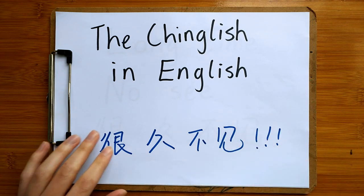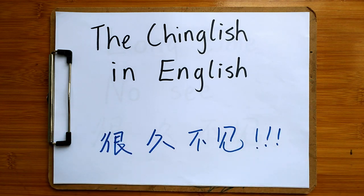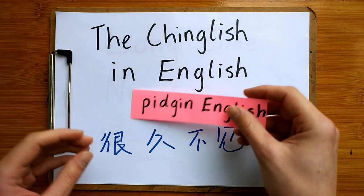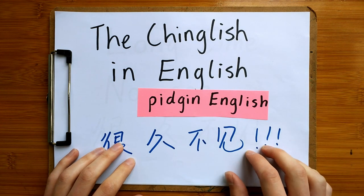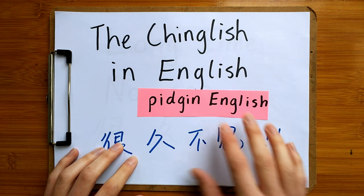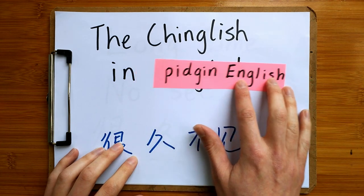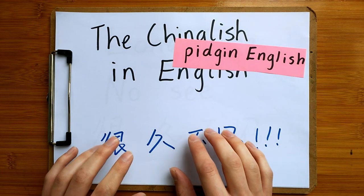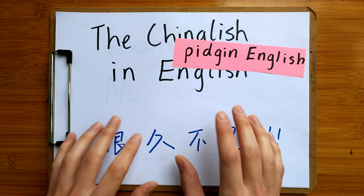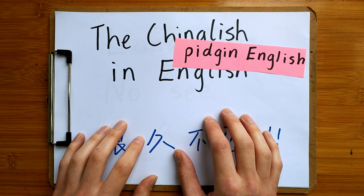Chinese English really comes from something called Pidgin English. There are many different types of Pidgin English around the world, and today we're going to look at Chinese Pidgin English. So let me give you a quick history lesson about Chinese Pidgin English.